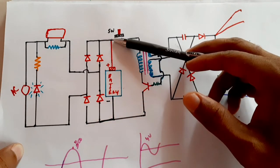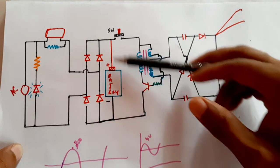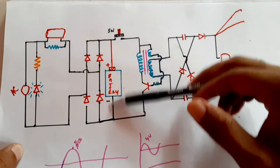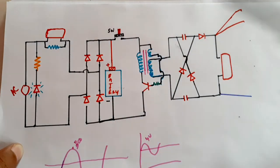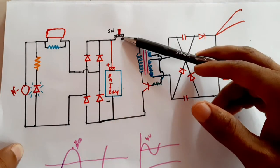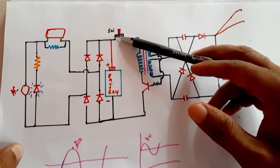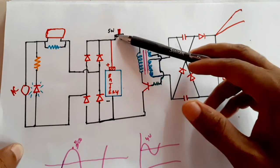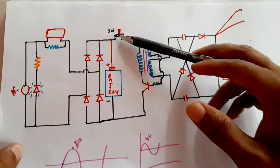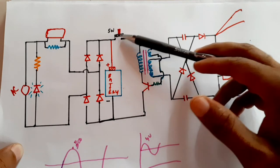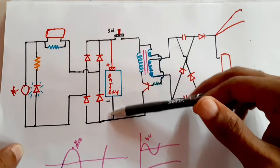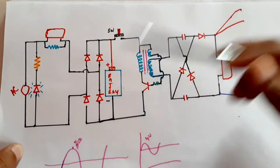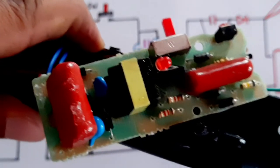A 4-volt output is available at this point and the battery is charged. During charging, the switch is not connected to the output, so the battery will get charged.